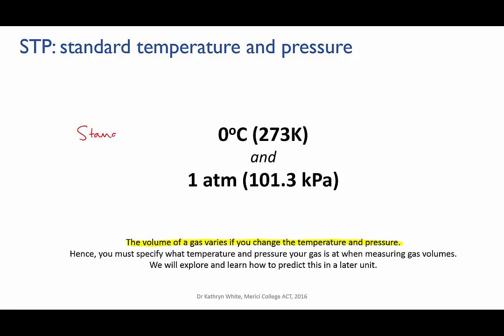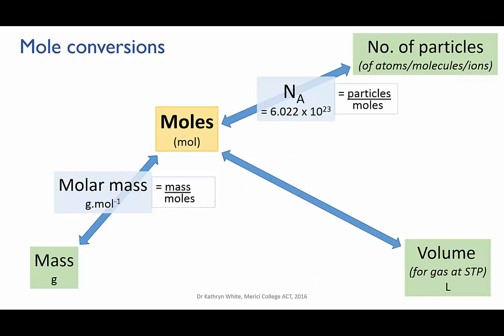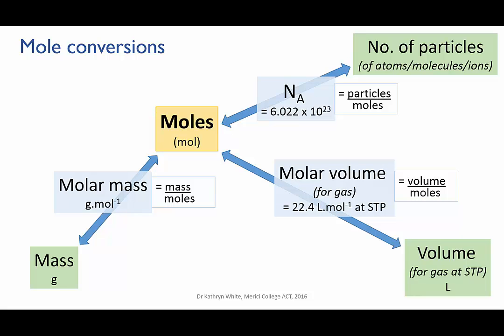It's STP when the temperature is zero degrees Celsius, or you could express it as 273 Kelvin, and the pressure is one atmosphere, which is the average air pressure at sea level, or if you measure it in kilopascals, it's 101.3 kilopascals. So if we want to convert moles of gas into a volume of gas—note that this really is just for gases, it doesn't work for liquids—we use the molar volume.